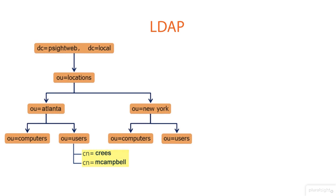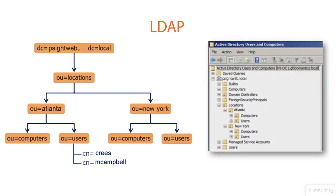From an Active Directory perspective, you can see we have PSiteWeb.local. Below that we have Locations, below that Atlanta, below that Users, and below that — under the users OU — is where the common name CREES is located. You can see how it's broken down into a folder structure.